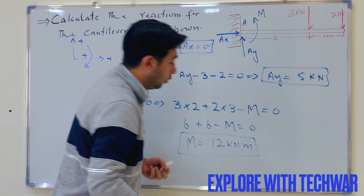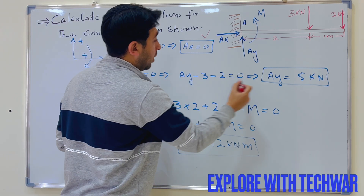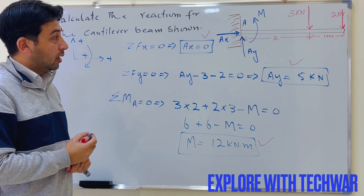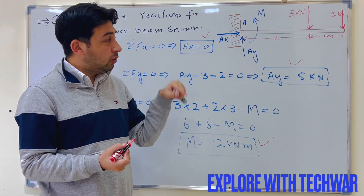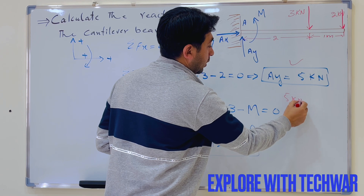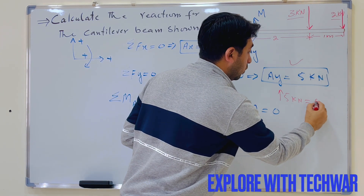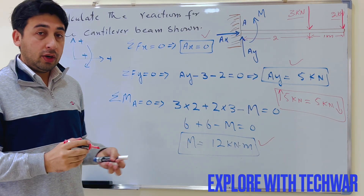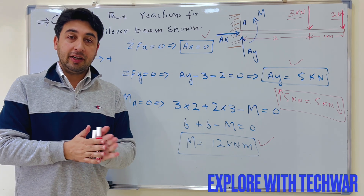So the three reactions on the cantilever beam are: AX equals zero, AY equals five kilo Newton, and M equals 12 kilo Newton meter. To verify: upward forces equal only AY at 5 kN, and downward forces are 3 kN plus 2 kN, which also equals 5 kN. Upward equals downward, confirming our answers are correct. This is how we find the reactions on a cantilever beam.